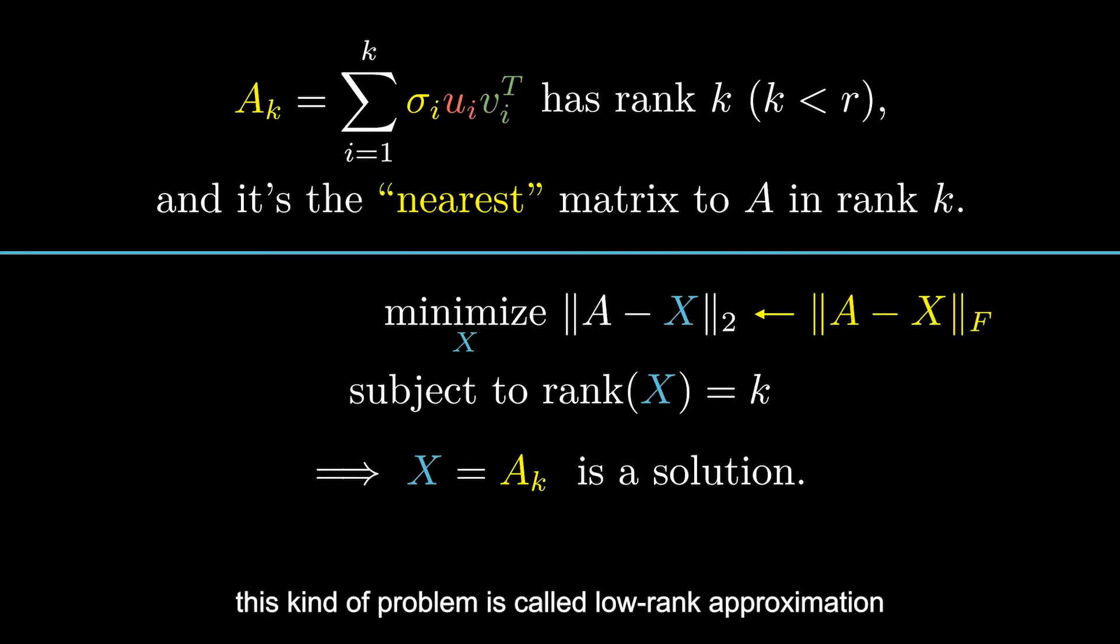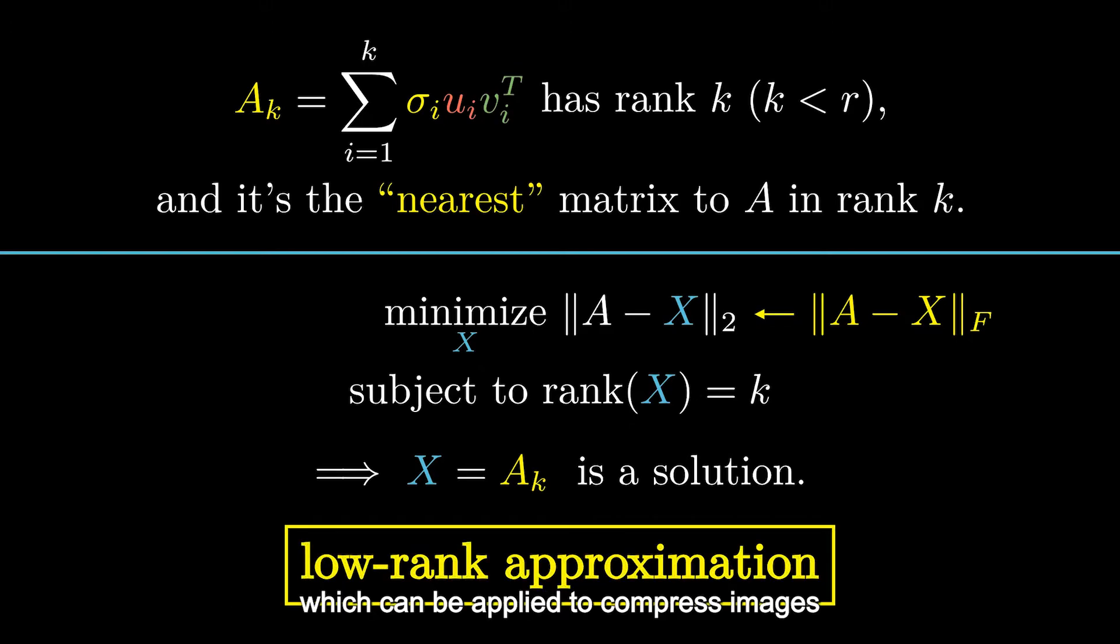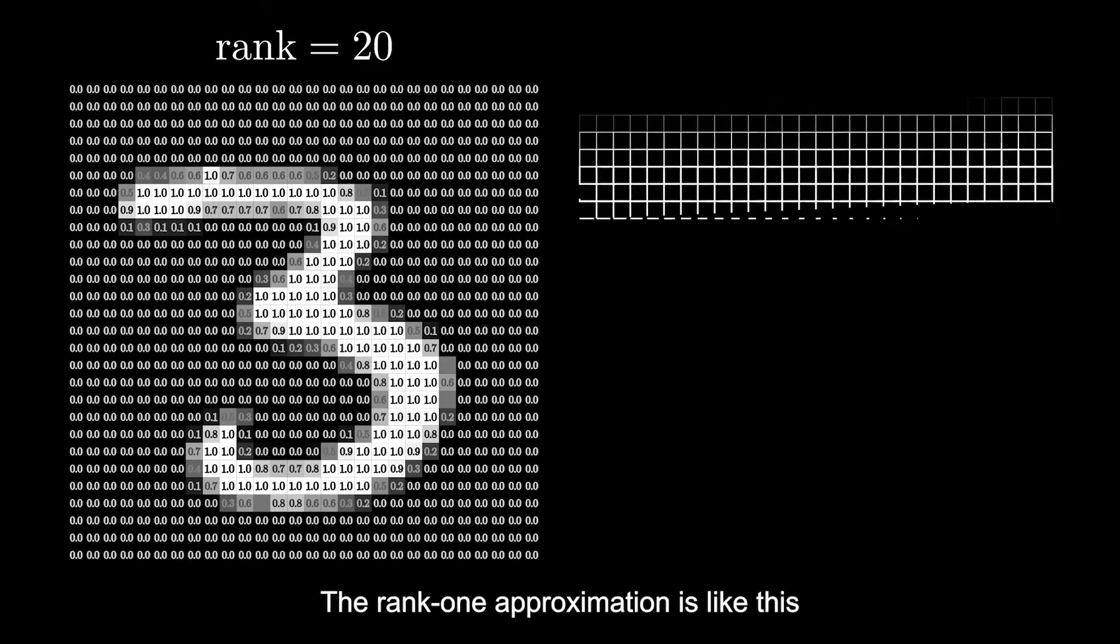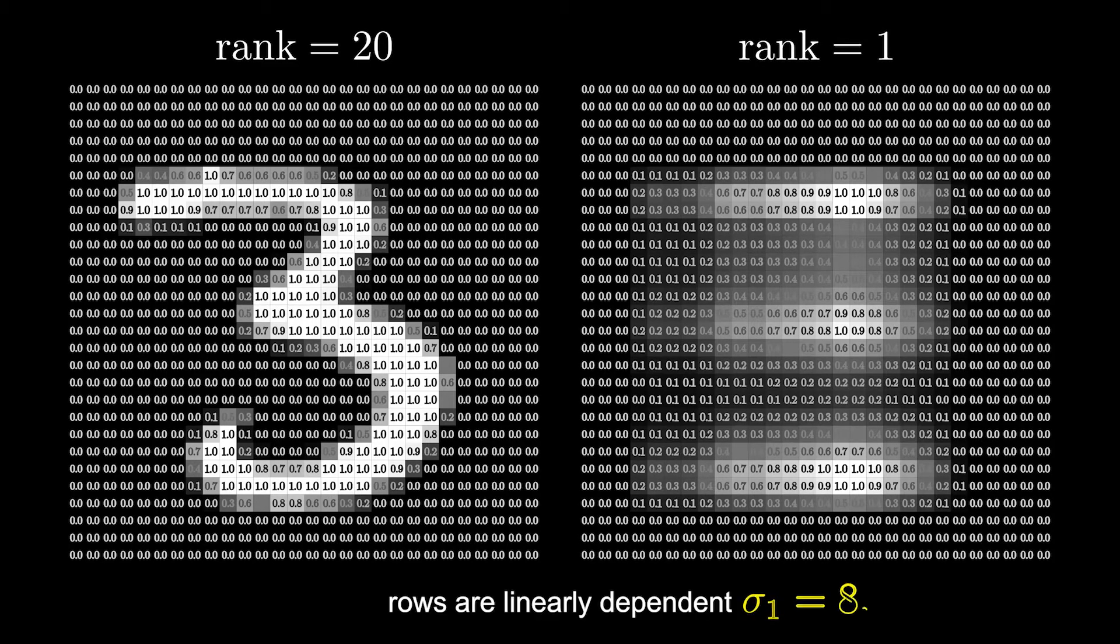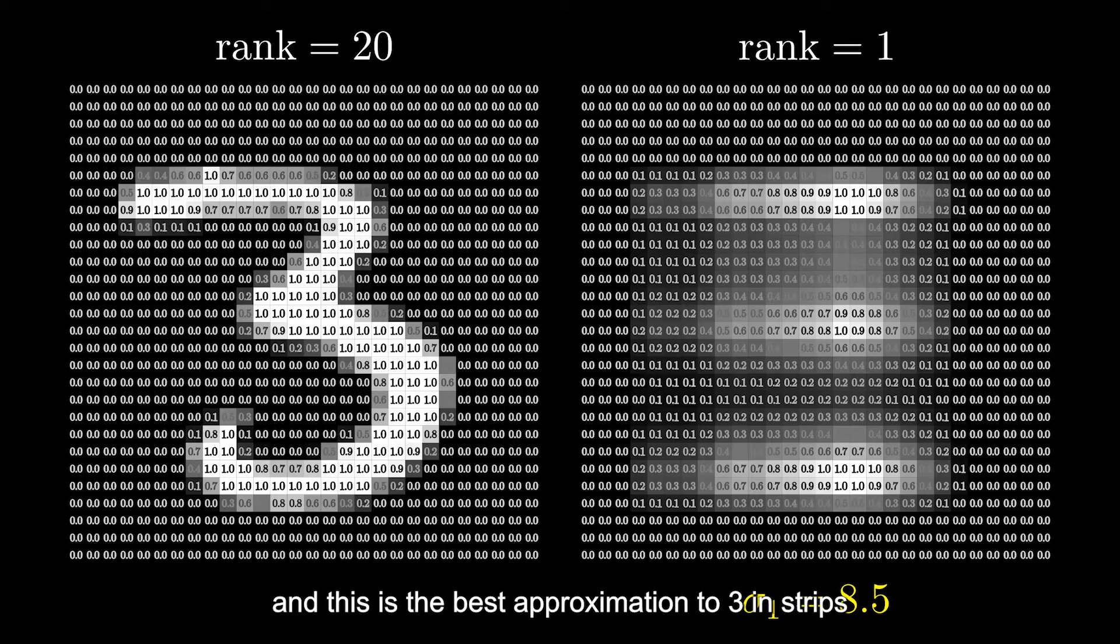This kind of problem is called low-rank approximation, which can be applied to compressed images. This is because an image is stored as a matrix, as in here I use 0 for pure black and 1 for pure white. As you can see, this is a handwritten figure 3 from MNIST dataset. The rank-1 approximation is like this, and it seems to be in strips because rows are linearly dependent, and this is the best approximation to 3 in strips.